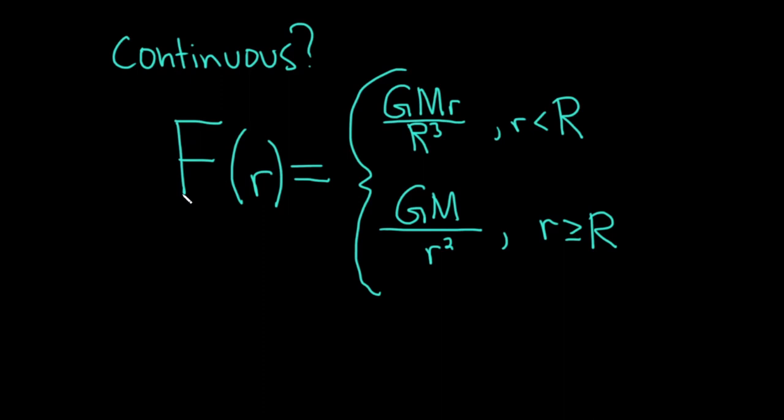Hi, in this problem, we have a function, f of little r, and it's given by a piecewise function. And this is basically something that tells you the gravitational force exerted by the Earth on a unit mass at a distance, little r, from the center of the planet. Okay, so here, big M is going to be the mass of the Earth. G is the gravitational constant.